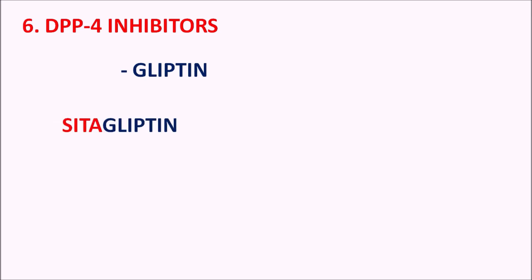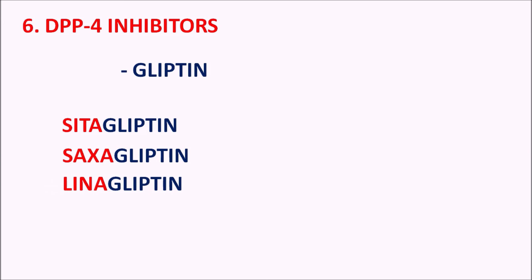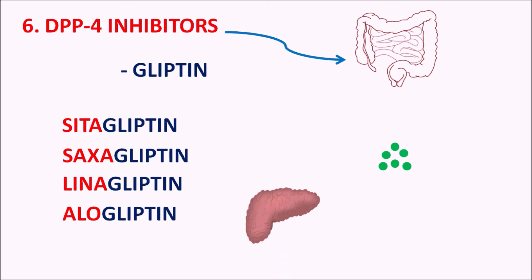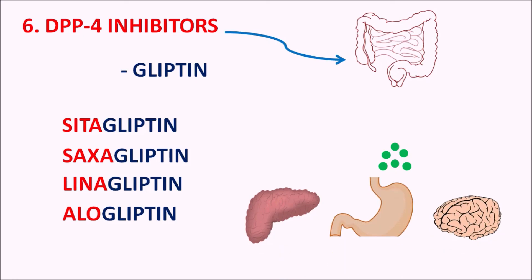Sixth are the DPP-4 inhibitors, with the suffix GLIPTIN. Drugs include sitagliptin, saxagliptin, linagliptin, and alogliptin. These drugs inhibit the metabolism of incretins so that incretins are more active. They affect the pancreas, gastrointestinal system, and brain to control glucose levels.